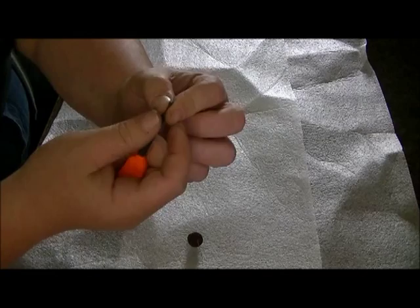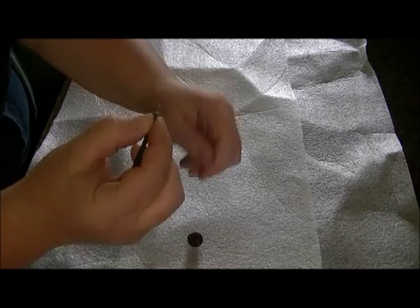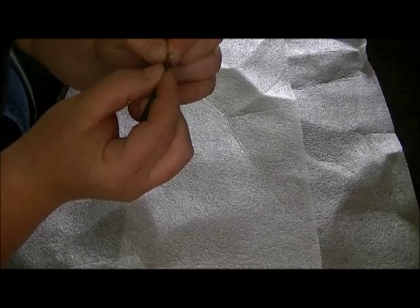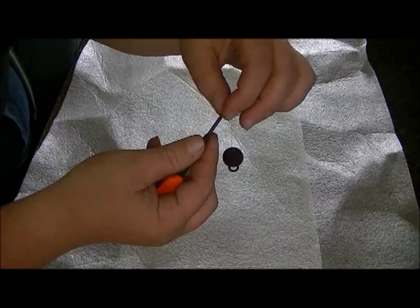Put your needle through the loop that you've just tied. Close it up and slide your rig sleeve up over the braid like so.